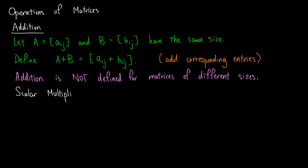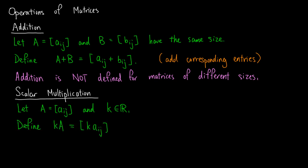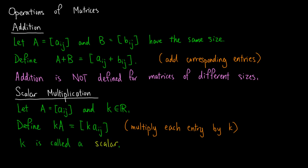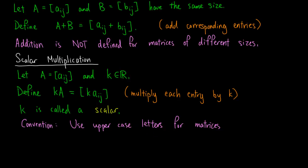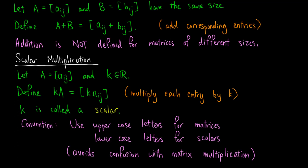Before talking about subtraction, we have to first introduce scalar multiplication. We let A be the matrix with entries Aij, and K be a real number. We define K times A to be the matrix with entries K times Aij. In other words, when we multiply K to the matrix A, we multiply each entry of A by K. Here, K is called a scalar. By convention, we use uppercase letters for matrices and lowercase letters for scalars. This is to avoid confusion with matrix multiplication, which we will introduce at a later stage.